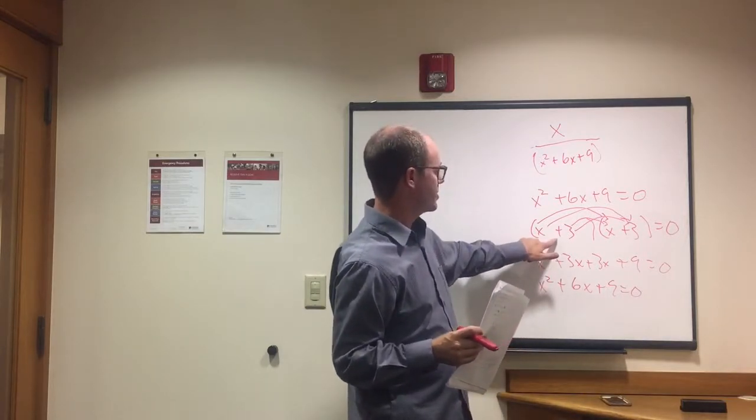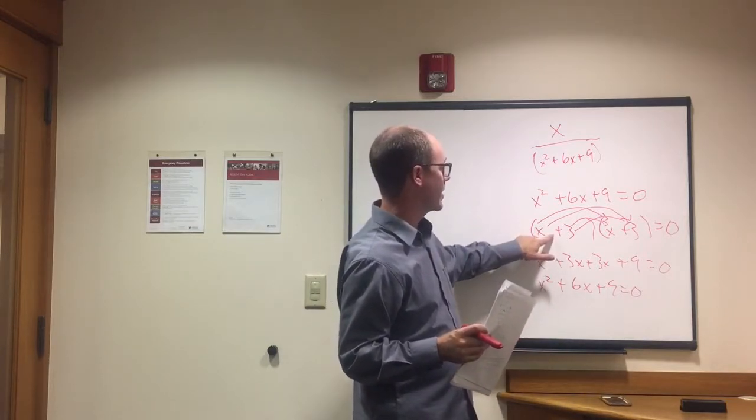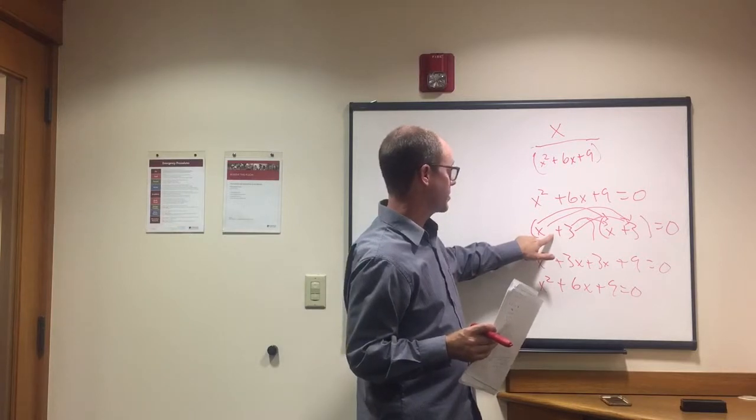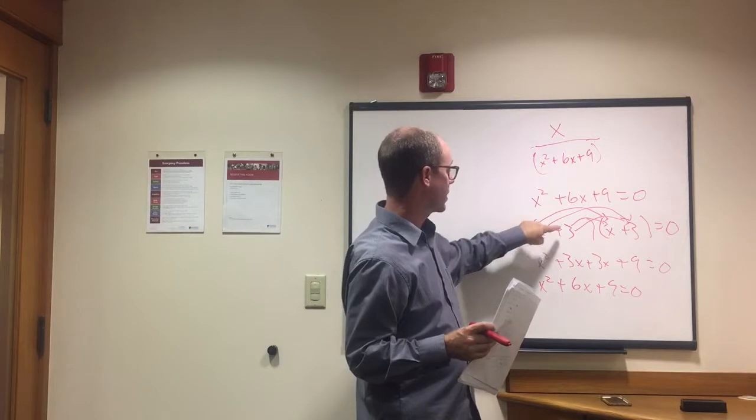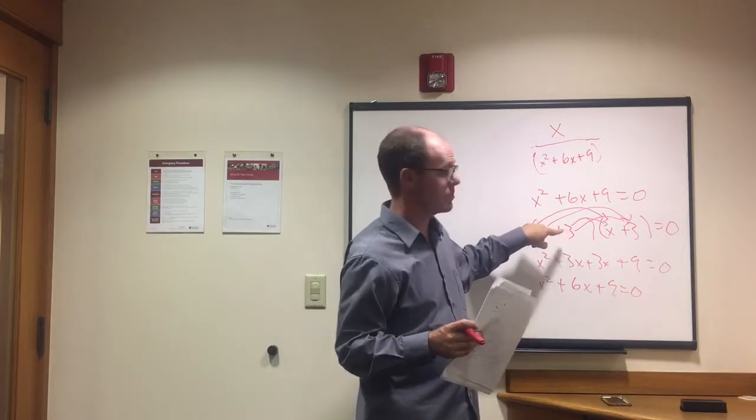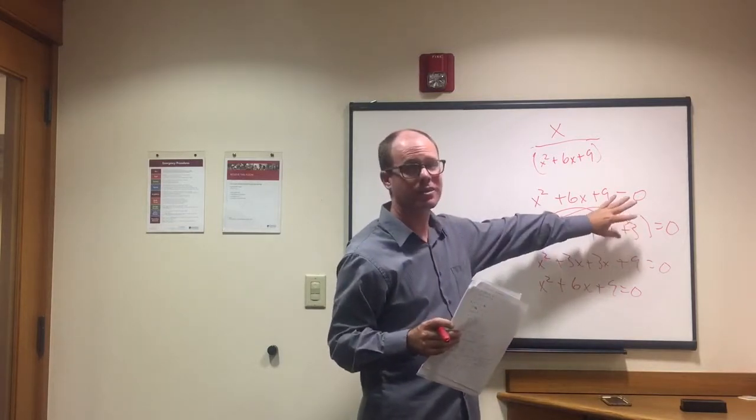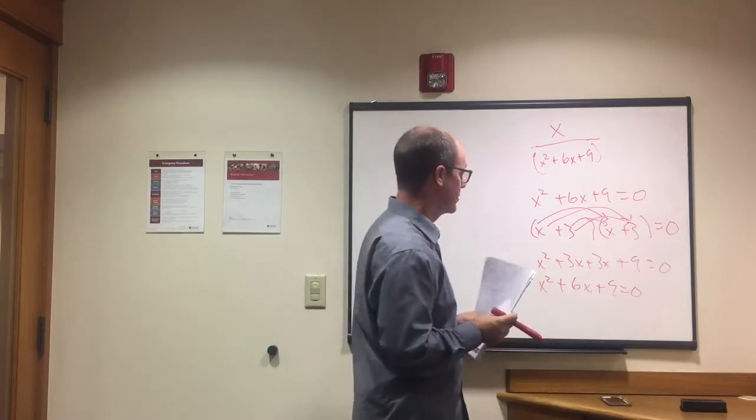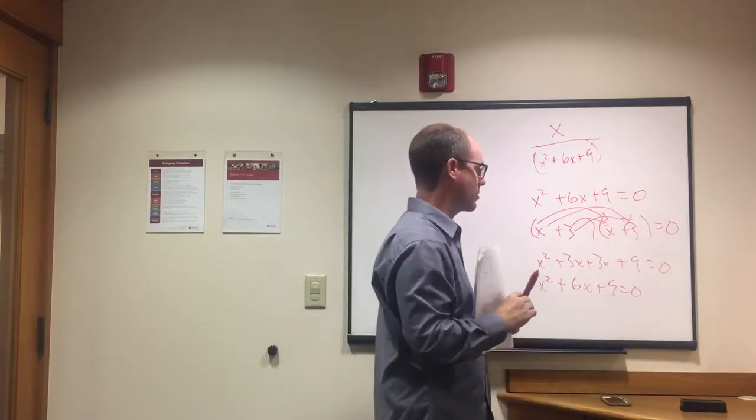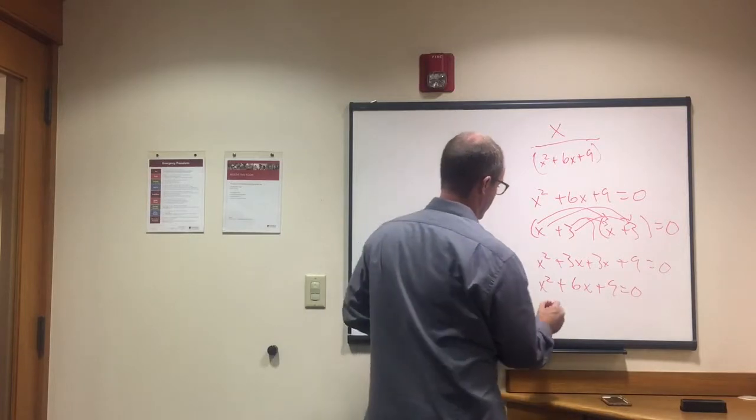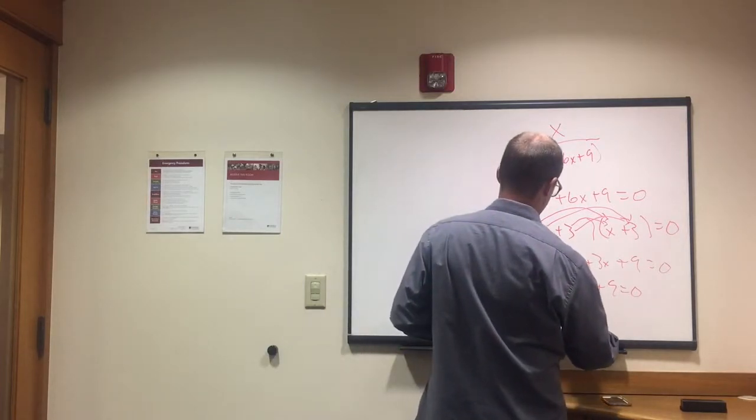So the question is, in this parentheses how do we get this to equal 0? We have (x plus 3) times (x plus 3) equals 0. If x equals negative 3, then negative 3 plus 3 would be 0, and whatever was over here wouldn't matter. Same is true over here. So basically what we have here is x equals negative 3.